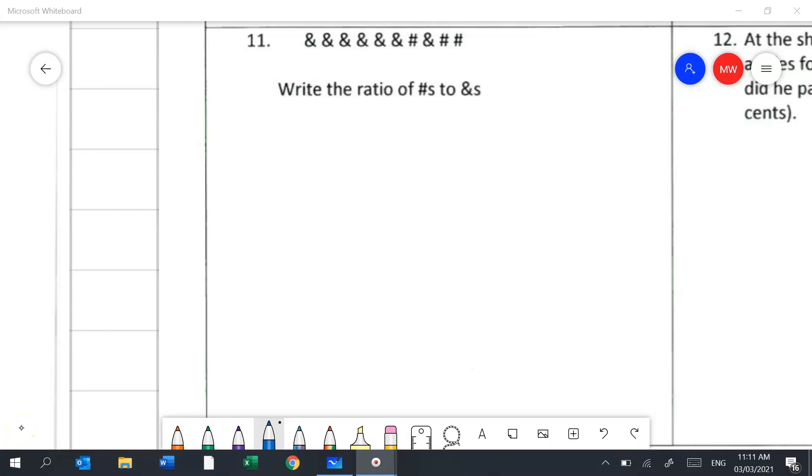Question 11 is a ratio question. This is a nice easy one. The only thing we've got to watch is that we've got to get the numbers in the right order. It's hashtags to and symbols. If you go through and you count your hashtag symbols 1, 2, 3, it will be a ratio of 3. And then if we count up our and symbols we've got 1, 2, 3, 4, 5, 6, 7. So that's an answer of 3 to 7.